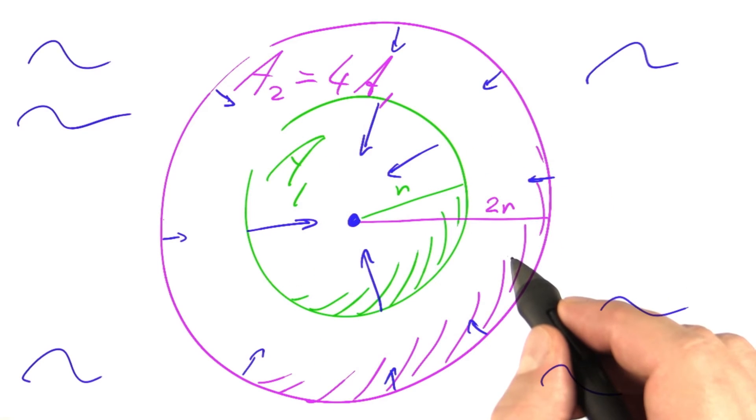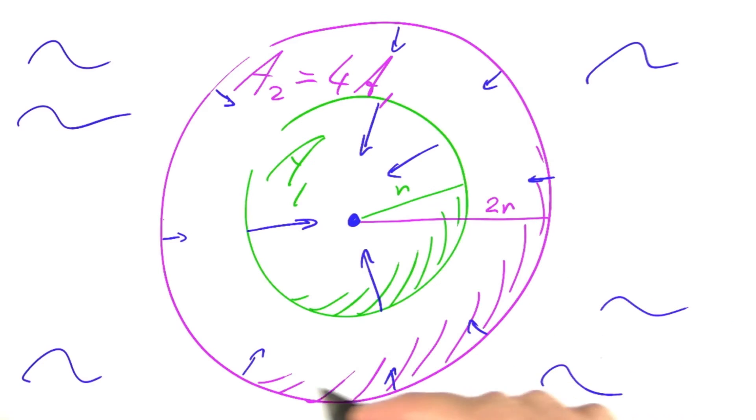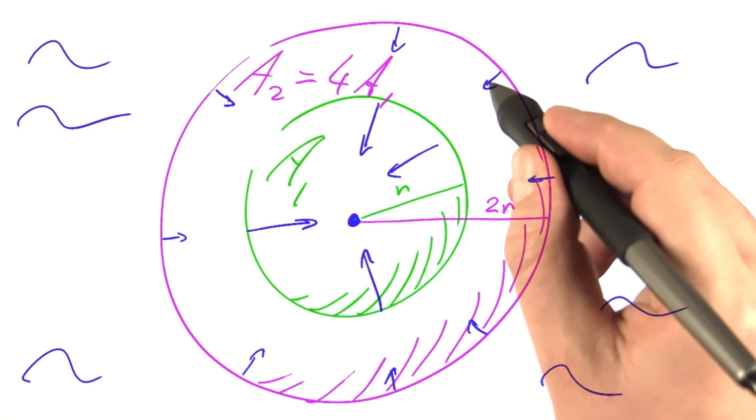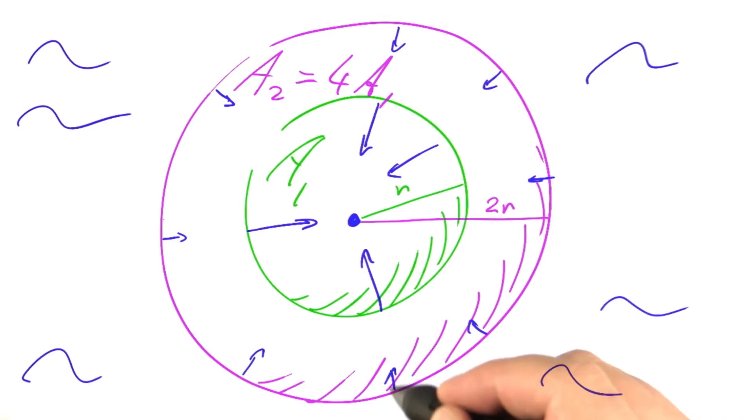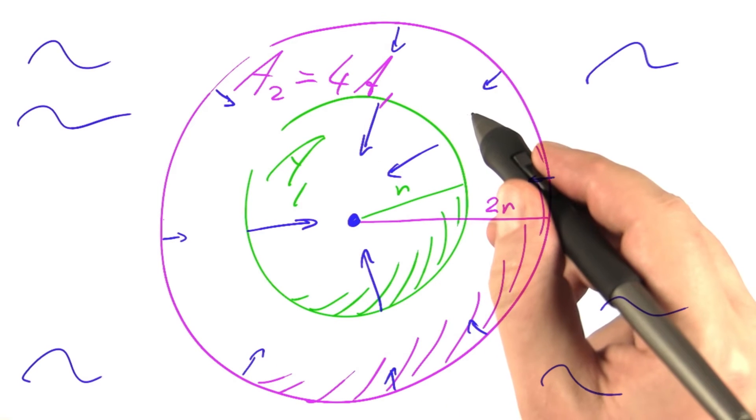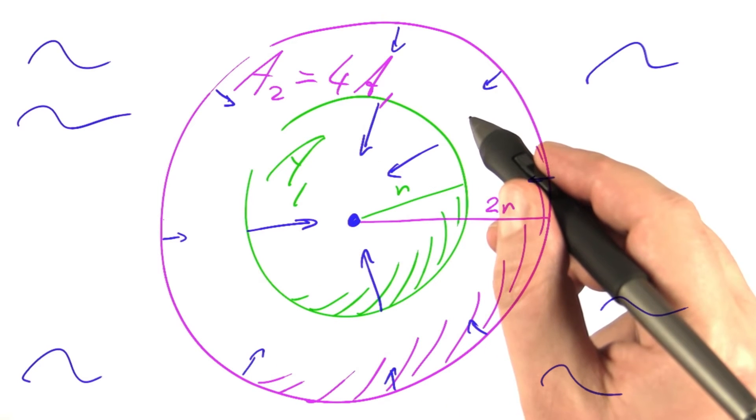Now the important quantity to consider is the flow of water through these spheres. How many cubic meters per second flow through these surfaces? This number has to be the same for the outer and for the inner sphere. We are not losing water or gaining water in between.